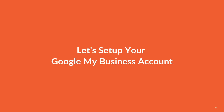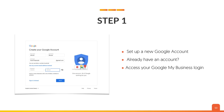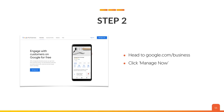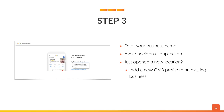So let's set up your Google My Business. Step one: set up a new Google account, or if you already have one, use that and access your Google My Business login. Step two: head to google.com/business and click on Manage Now. Step three: enter your business name — avoid accidental duplication, as a lot of people make this mistake. If you just opened a new location, add a new Google My Business profile to the existing business as well.